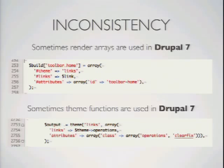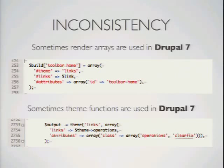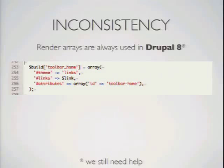This is talking about render arrays and theme functions. In general, we had a very big inconsistency there. Most functions in core would already create these big arrays with the build as a render array. But there were also lots of places in core where you would actually call the theme function directly, and we are very close to deprecating that from Drupal 8. If in your modules you are still using theme calls, start converting them now — it will help with performance, caching, and other things.